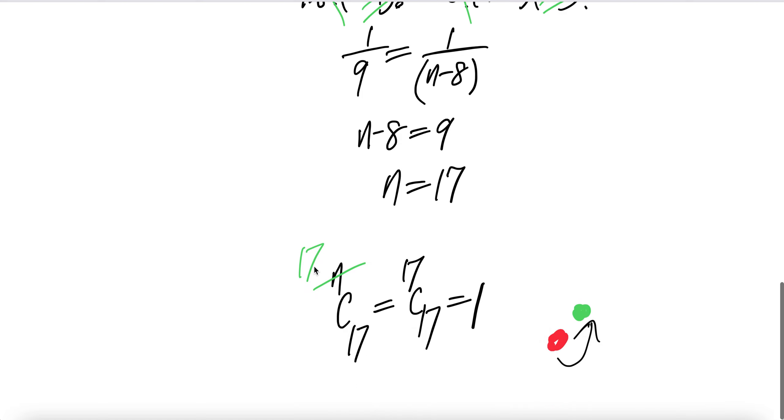So you need to find n choose 17 and then n is 17. 17 choose 17 is 1. Done.